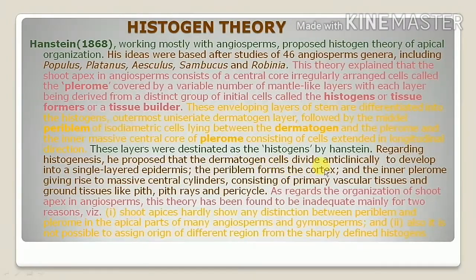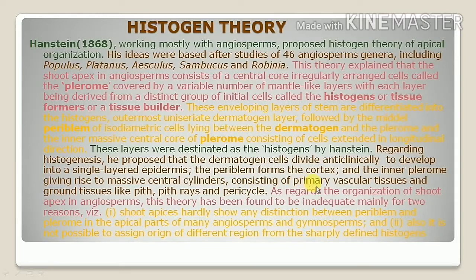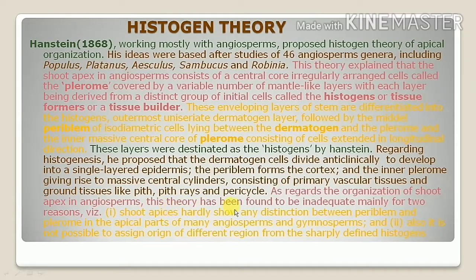Regarding histogenesis, Hanstein proposed that dermatogen cells divide anticlinally to develop into a single-layered epidermis, the periblem forms the cortex, and the inner plerome gives rise to the massive central cylinder consisting of primary vascular tissue and ground tissue like pith, pith rays, and pericycle.